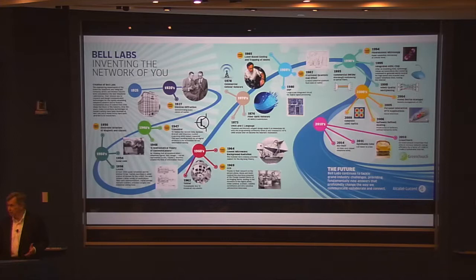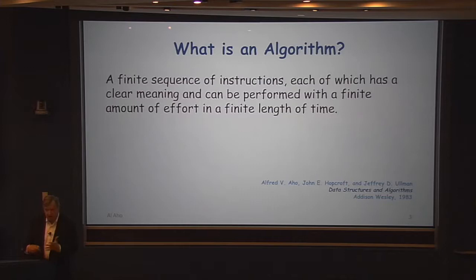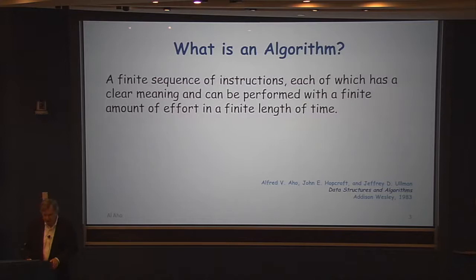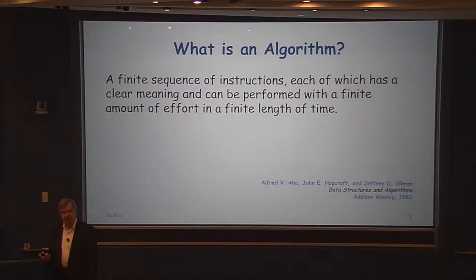Let's start with basics. Here's the definition of an algorithm — this is what Don Knuth used in his The Art of Computer Programming. It's just a finite sequence of instructions; you can execute each instruction in a finite amount of time, even with pencil and paper. I teach computer science theory at Columbia, and there are two standard textbooks. One by Hopcroft, Motwani, and Ullman uses this definition. The other by Sipser says an algorithm doesn't have to halt on all inputs. So even the most fundamental term in computer science, computer scientists can't agree on what the basic definition should be.